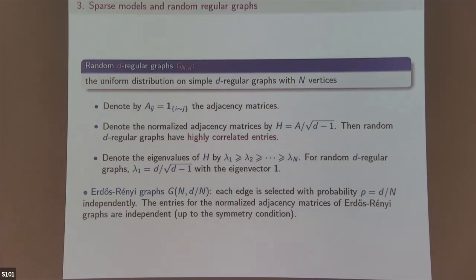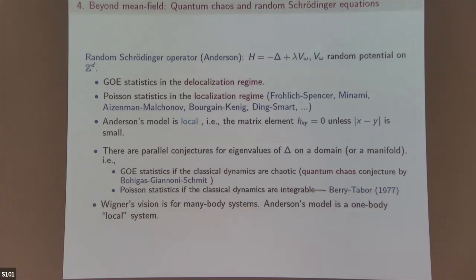The random Schrödinger equation: there is a delocalization region where GOE statistics hold, and a localization region with Poisson statistics. Many works address this: the first breakthrough was by Minami; Aizenman and Warzel gave a beautiful proof; later Bourgain-Kenig and Klein-Molchanov and others contributed a huge body of literature.